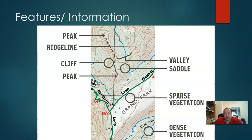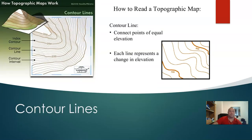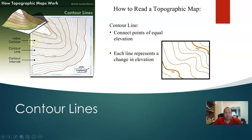There's a lot we can figure out by looking at the contours on a topographic map. When we look at the contour lines, there are a couple of big ideas we want to pick up on: what an index contour is, what a regular contour line is, and what a contour interval is.